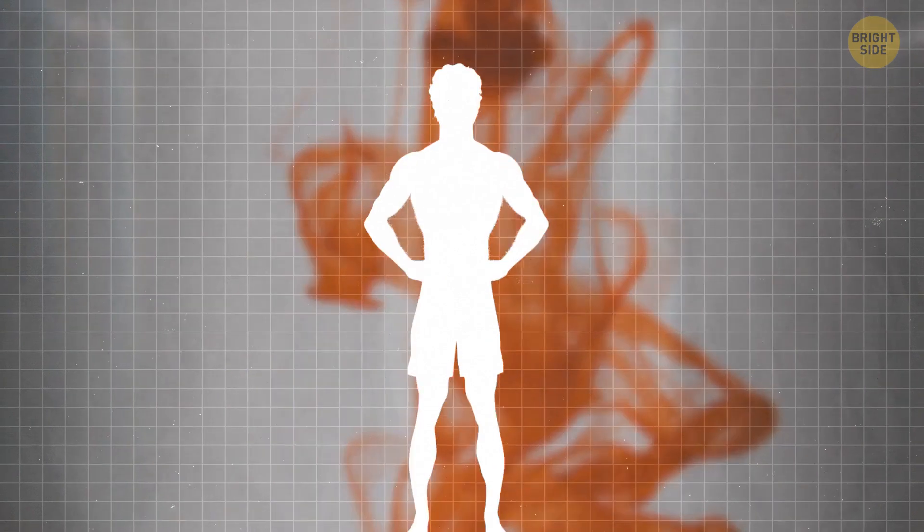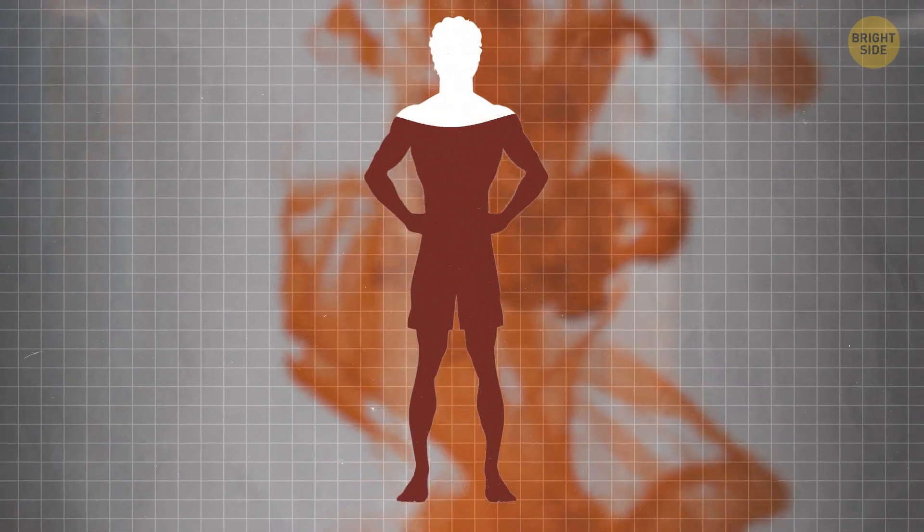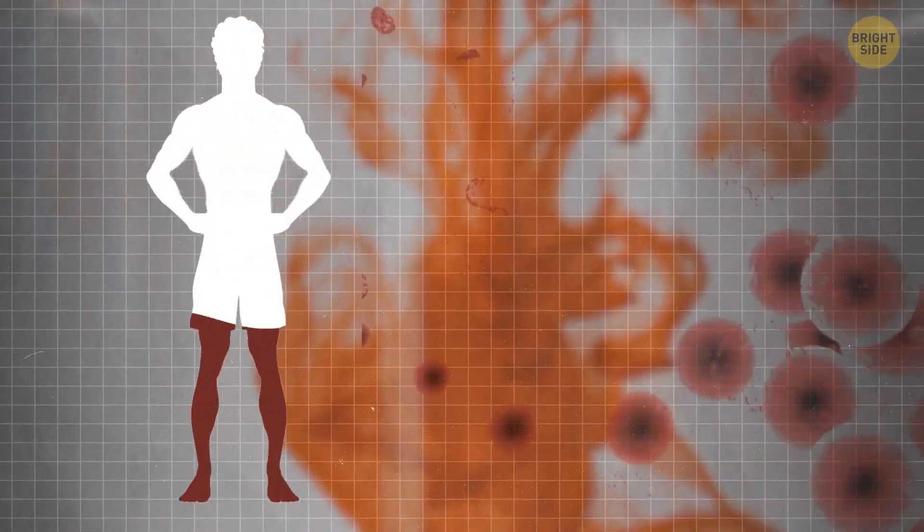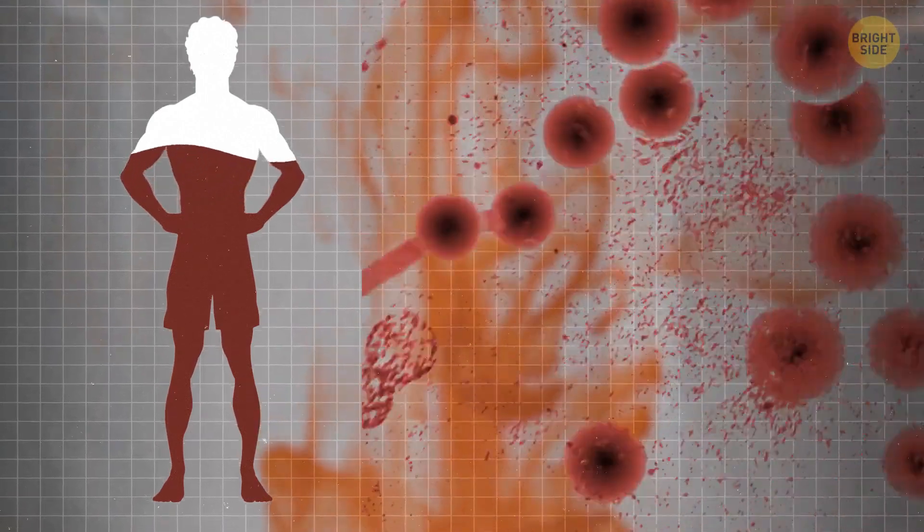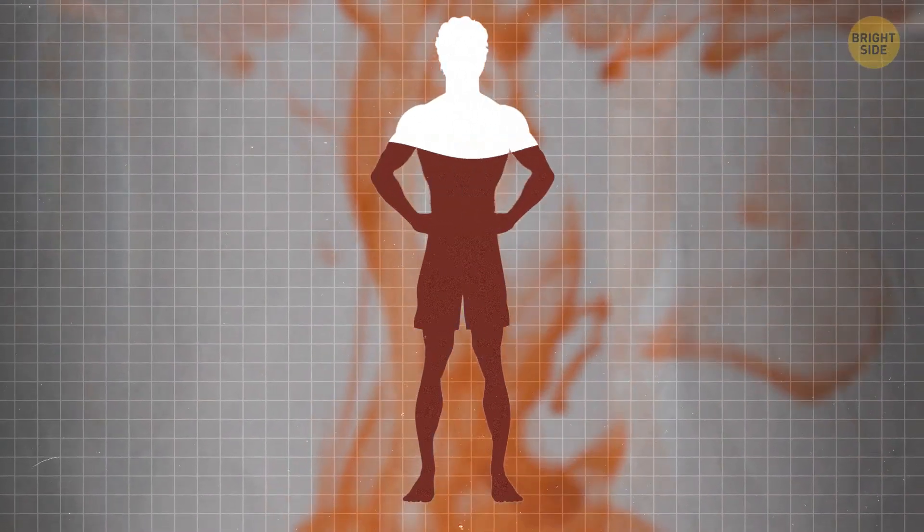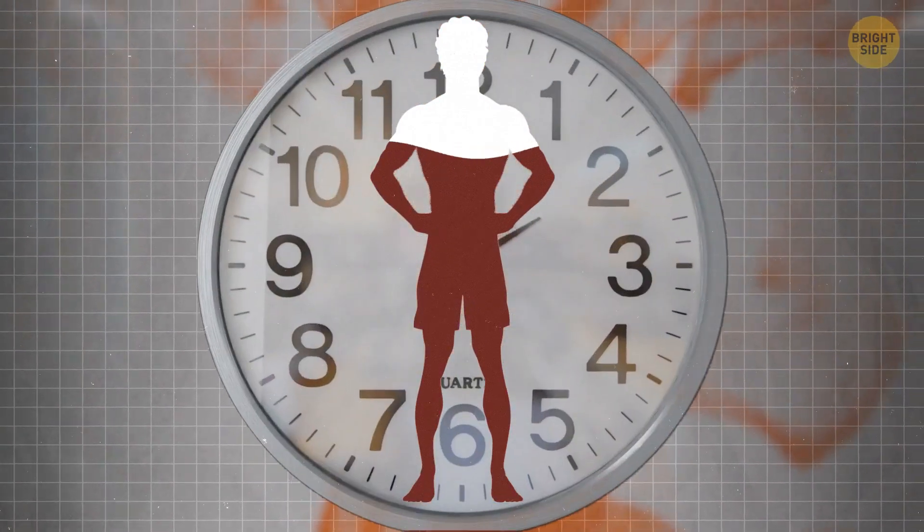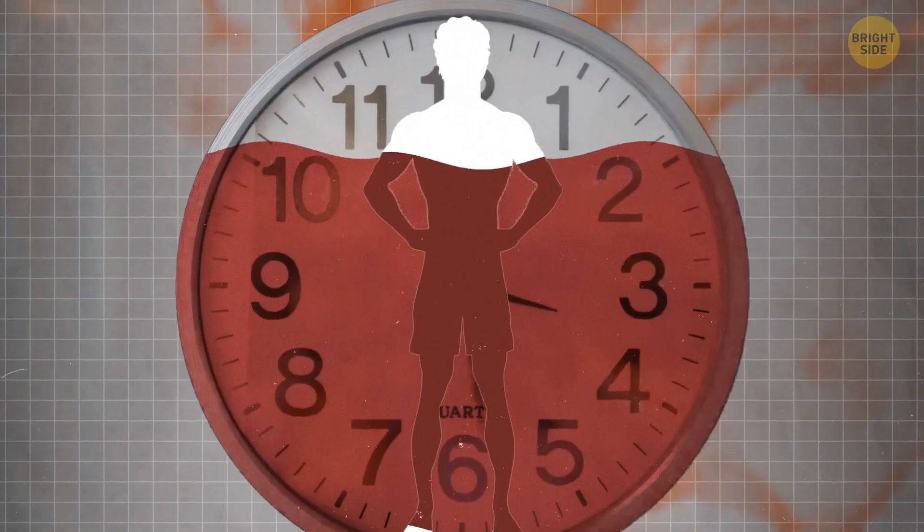Ever wonder how fast your body bounces back after losing blood? We've got on average about 10 pints of it in our adult bodies. When one of them is lost, our bodies start working hard to replace it. And it's faster than you'd imagine. Within 24 hours, the volume loss is replaced. And within a few weeks, we're as good as new.